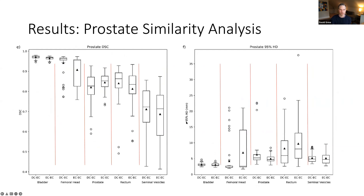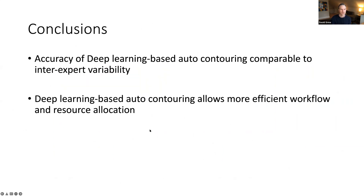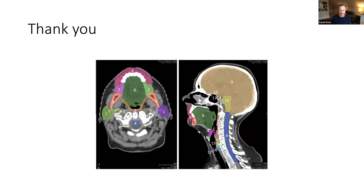A similar story holds for the prostate analysis. Their overall conclusions, which are very reasonable, are that the accuracy of deep-learning-based auto-contouring is comparable to inter-expert variability, and that deep-learning-based auto-contouring allows for more efficient workflow and resource allocation — especially in an environment where most places are dealing with short staffing and other challenges. That's all I have for today — thanks so much for listening and I hope you have a great day.